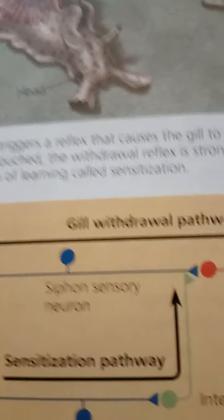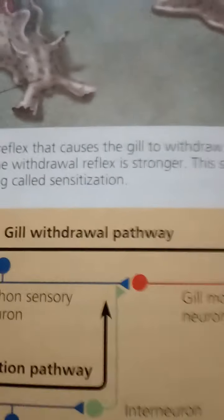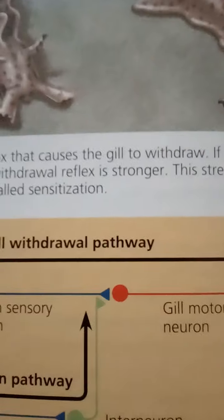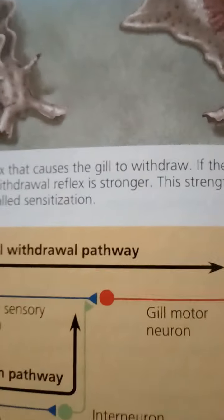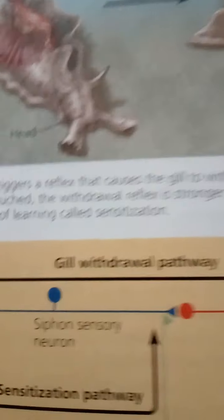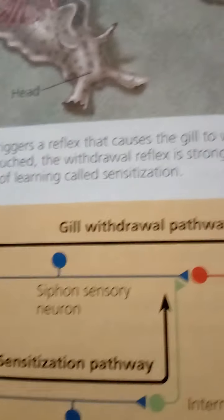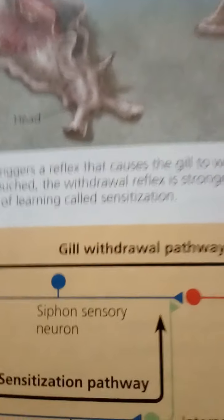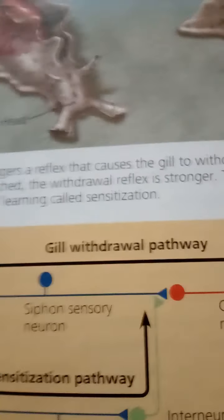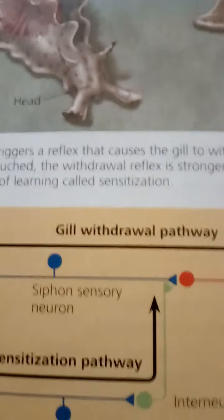Notice also that, since sensitization in the sea slug Aplysia californica, the binding of glutamate to these two types of receptors can lead to LTP through changes in both the presynaptic and postsynaptic neurons.